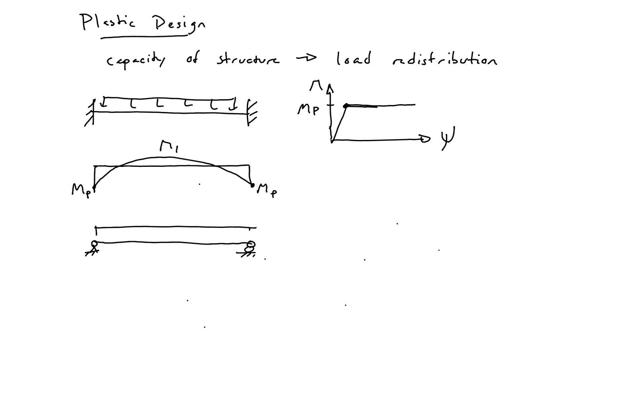So now we can continue to push this structure and continue to put additional load on it. In our traditional designs, we would have assumed that collapse would have occurred at this first point when we have MP at the end. In actuality, the member can take additional load.